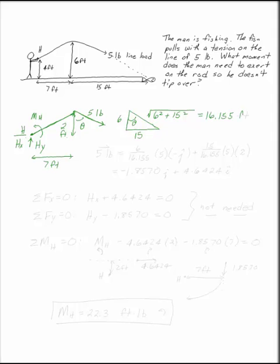That's useful because we can write this five pound load in its vector form as six over sixteen point one five five by similar triangles times its magnitude of five in the negative j direction and fifteen over sixteen point one five five times its magnitude of five in the i direction. We don't actually need to find theta. We can go ahead and write these in their component forms like that. All of our other forces are already in the Cartesian coordinate form so we don't have to change them.